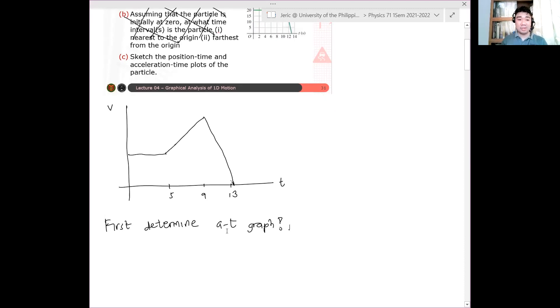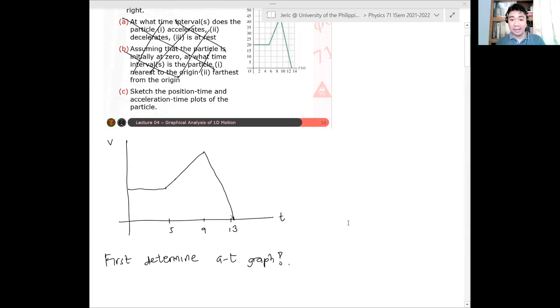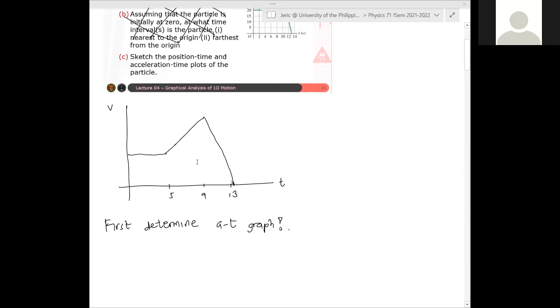So what we want is the acceleration-time and position-time. I'll first determine the acceleration-time. How do you determine the acceleration-time? First, since all of these are lines, we expect that the acceleration is constant. Remember, for the VT graph, the slope of the tangent line is the acceleration. So what I will do first is divide this into different regions. I'll draw dashed lines.